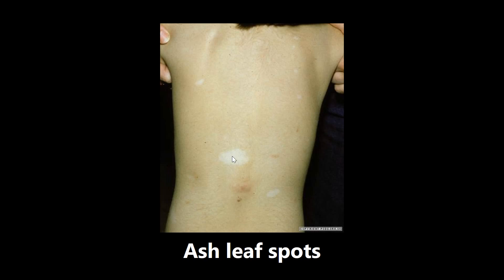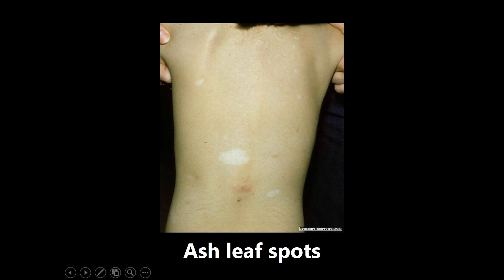This next one is an example of ash leaf spots — hypopigmented macules that are seen in tuberous sclerosis. This might look like tinea versicolor to some, but you want to get information from the question stem. Tinea versicolor is usually pretty mild with just this skin condition, but if there's a genetic component or the patient has a lot of other systemic conditions going on, think ash leaf spots and tuberous sclerosis.